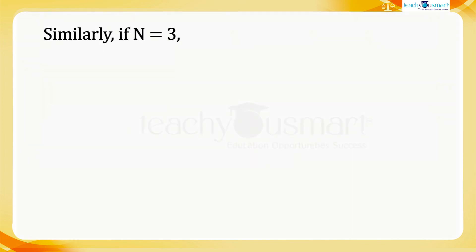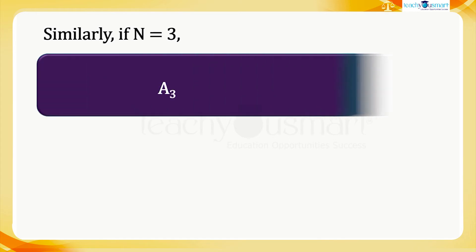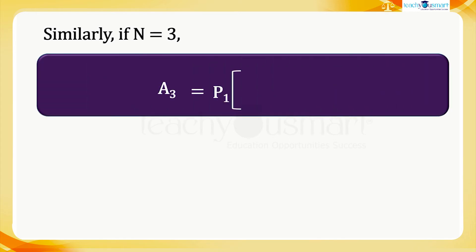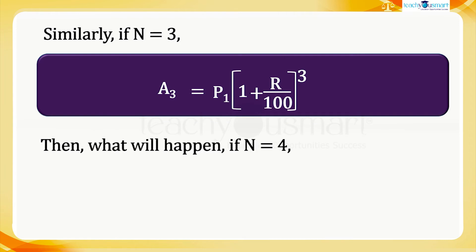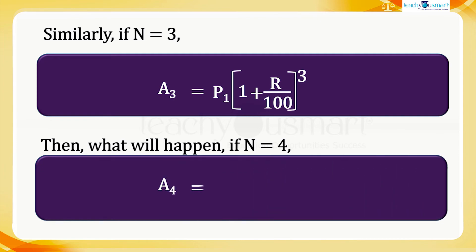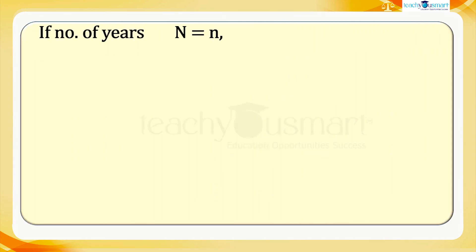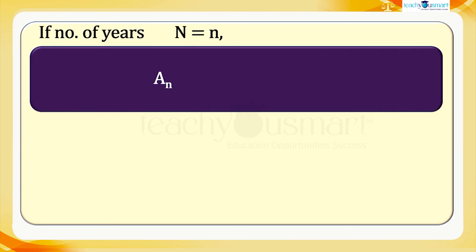Similarly, if n equals 3, then the total amount at the end of the third year A₃ equals P₁ × (1 + r/100)³. If n equals 4, the total amount at the end of the fourth year A₄ equals P₁ × (1 + r/100)⁴. Then if the number of years equals n, the total amount Aₙ equals P₁ × (1 + r/100)ⁿ.